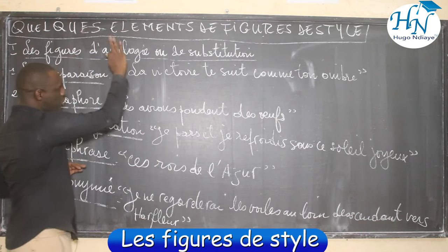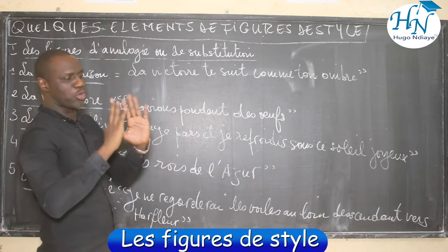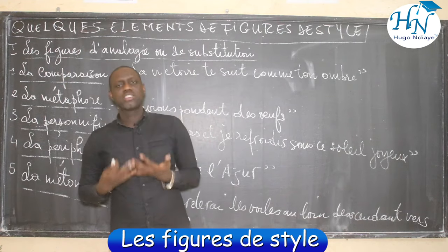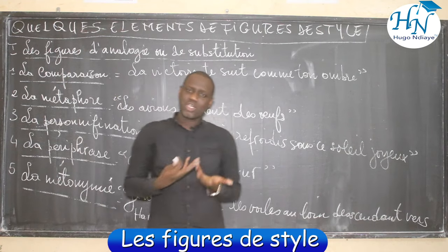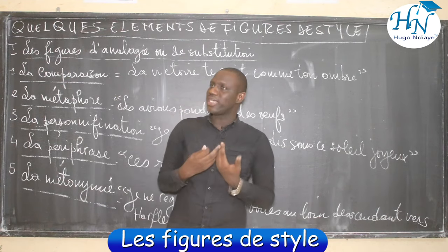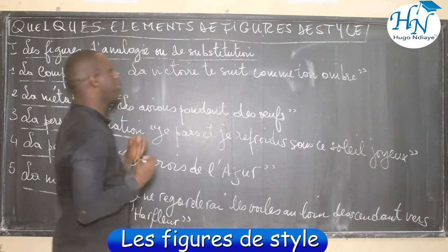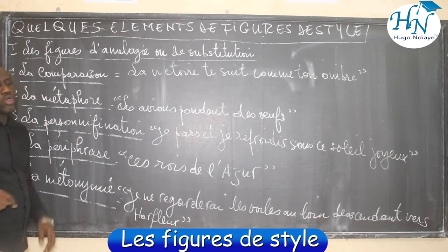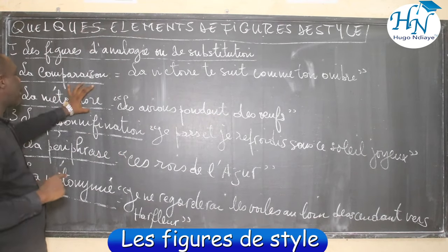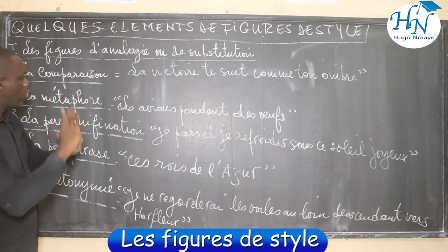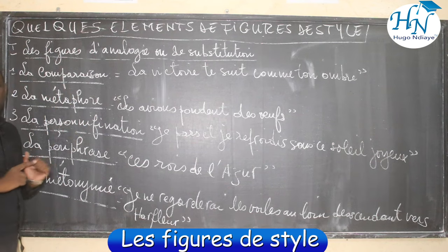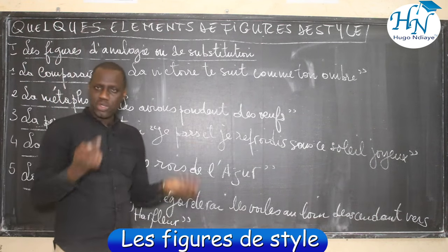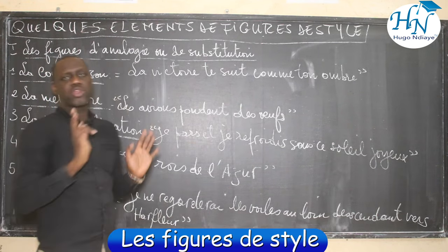Parmi ces figures, les plus régulières — en tout cas les figures qu'on retrouve souvent dans les textes poétiques, ou bien romanesques, ou bien dans les textes théâtraux — nous pouvons avoir la comparaison, la métaphore, la personnification, la périphrase, ou bien ce qu'on appelle la métonymie.